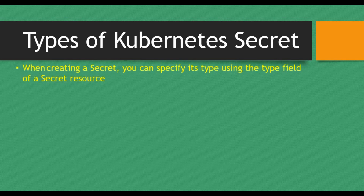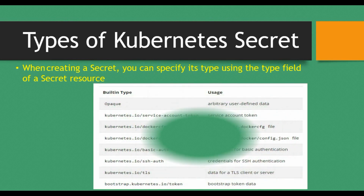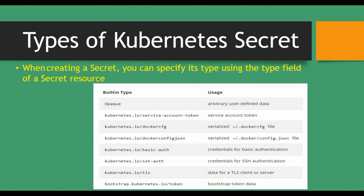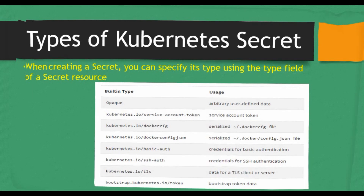Let's look at the different types of Kubernetes Secrets. When you create a secret using a YAML manifest file, you can specify the type field. The built-in types include: Opaque, service account token, docker config, docker config JSON, basic authentication, SSH auth, TLS, and token. In this tutorial we'll mainly focus on basic auth, which covers username and password credentials.